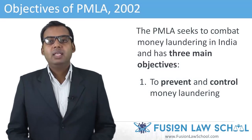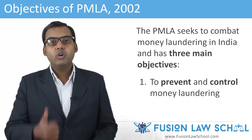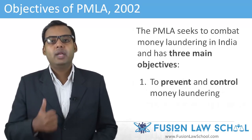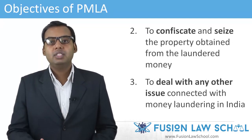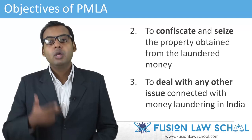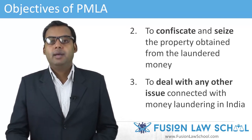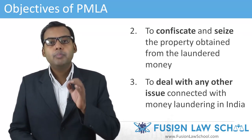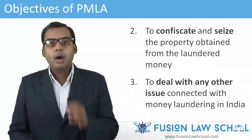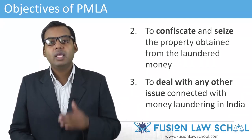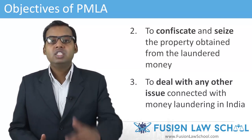The PMLA seeks to combat money laundering in India and has three main objectives. First, to prevent and control money laundering. Second, to confiscate and seize all the properties obtained from laundered money. Third, to deal with any other issues connected with money laundering in India. In simple words, the purpose of PMLA is to prevent any type of organized crime or mafia from investing their wealth into the economy and converting their tainted wealth into legitimate wealth.